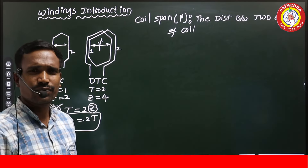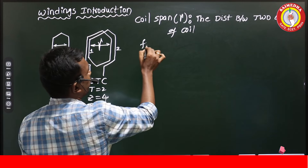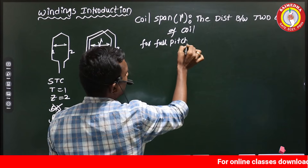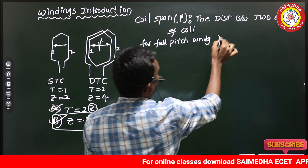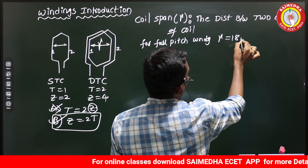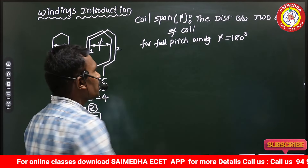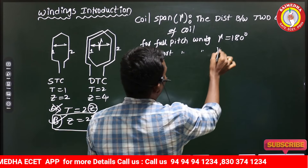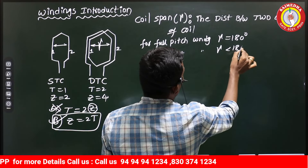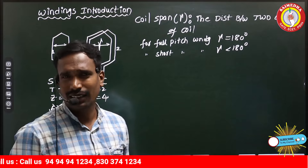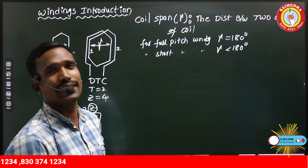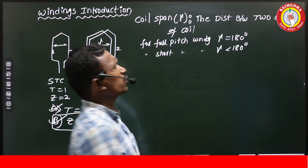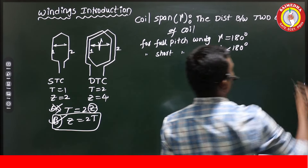For full pitch winding, the coil span gamma is exactly equal to 180 degrees. For short pitch winding, the coil span gamma is less than 180 degrees. For over pitch winding, the coil span gamma is greater than 180 degrees. So the coil span is simply the distance between two coil sides of a coil.